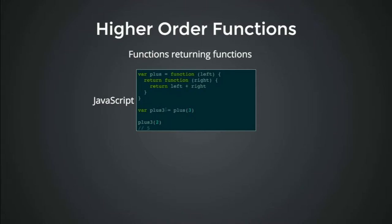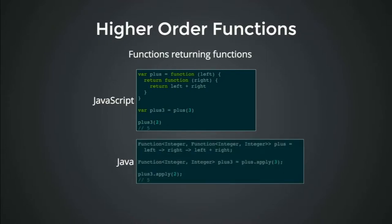We take the left parameter and the right one in the closure scope, then add the two together as a return value of the inner function. So you define a value 'plus three' which means take this and plus three — exactly what it does. So 'plus three' on two gives five. Simple concept but really powerful in functional programming. In Java, a function that returns a function of integer-to-integer behaves exactly the same way, though you have to call the apply method on them since they're technically classes.